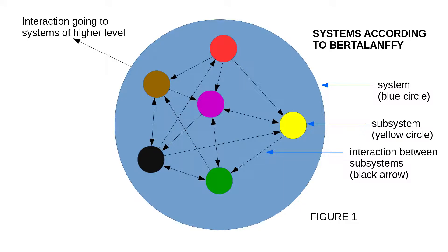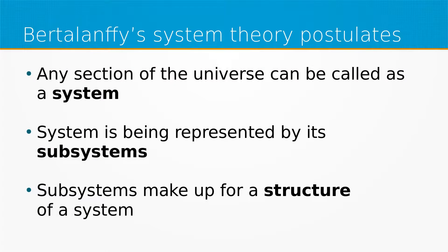The small colorful circles inside the big blue circle are called subsystems and are part of the system represented by the big blue circle. Bertalanffy's system theory postulates that any section of the universe can be called a system and that the system is represented by its subsystems. Subsystems make up the structure of a system. For example, the structure of a human body is specified by particular human organs as subsystems. The structure of a computer is specified by its memory modules, processor, buses, etc. — all subsystems of the system called computer.